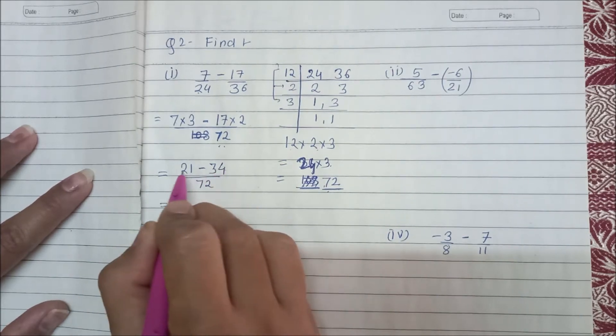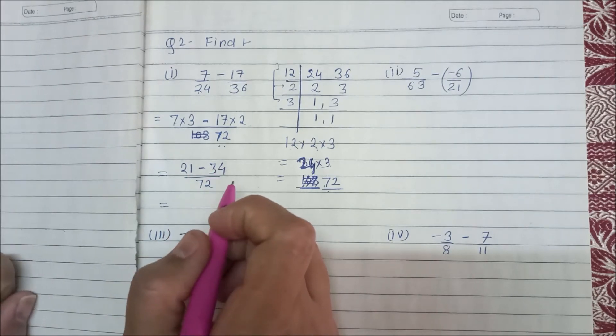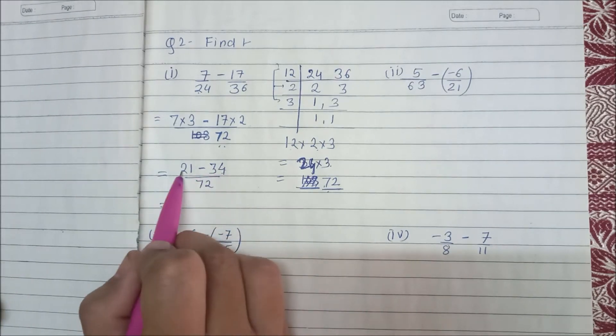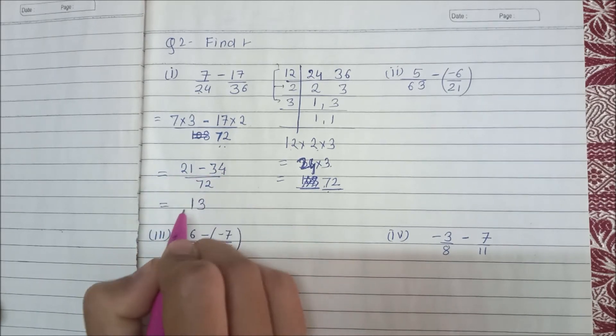Right, 1 addition, 1 subtraction, and the sign will be of the big number. 34 minus 21, 4 minus 1 is 3, 3 minus 2 is 1, so 13 upon 72.